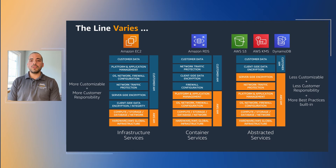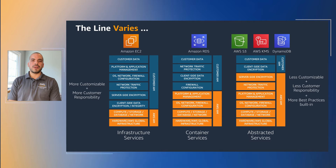AWS customers inherit the most comprehensive compliance controls with AWS. AWS supports more security standards and compliance certifications than any other offering, including PCI DSS, HIPAA, FedRAMP, GDPR, FIPS 140-2 and NIST 800-171, helping customers satisfy compliance requirements for virtually every regulatory agency around the globe. If you're looking for reports regarding any of the previous regulations, you can find more within the AWS Artifact section in your AWS management console.